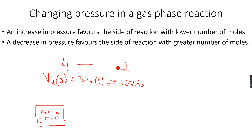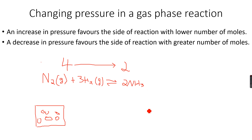4 moles of reactants give 2 moles of products. The side with the lower number of moles is the products side — from 4 to 2. When I increase the pressure of this system in dynamic equilibrium, more N2 and H2 react to form more NH3, because the equilibrium shifts to the right. The forward direction is the direction with the lower number of moles.